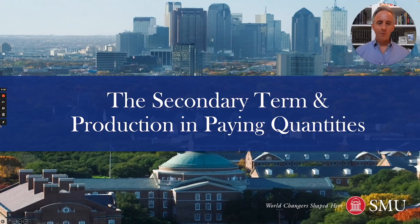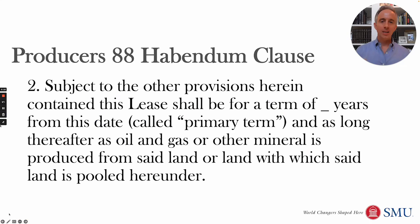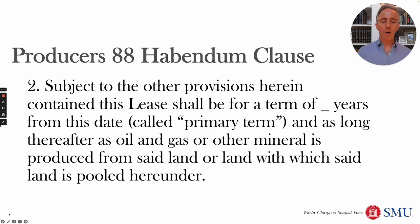Welcome to Oil and Gas Law with Energy Law Prof. Today we'll talk about the secondary term and production in paying quantities. The typical habendum clause says that the oil and gas company, the lessee, gets to keep that lease as long thereafter as oil and gas or other minerals are produced. That doesn't literally mean a tiny trickle of oil and gas is sufficient to keep the lease — typically what is required is paying quantities.